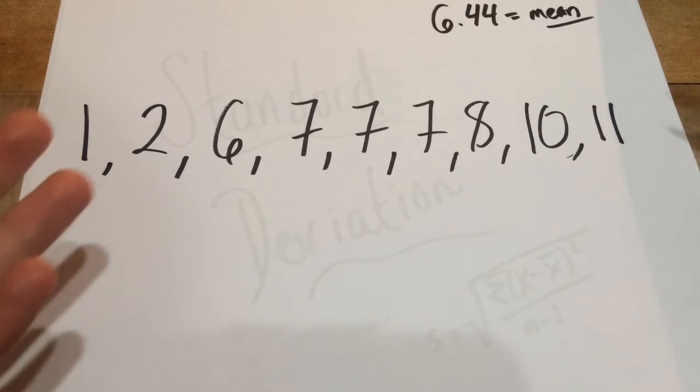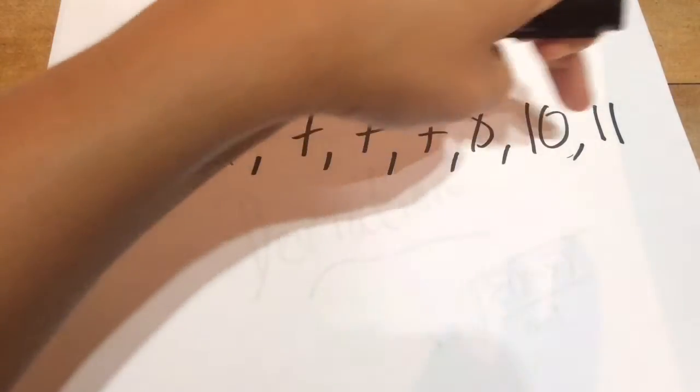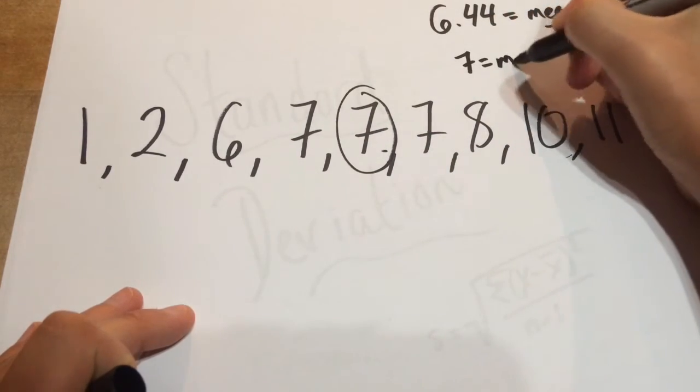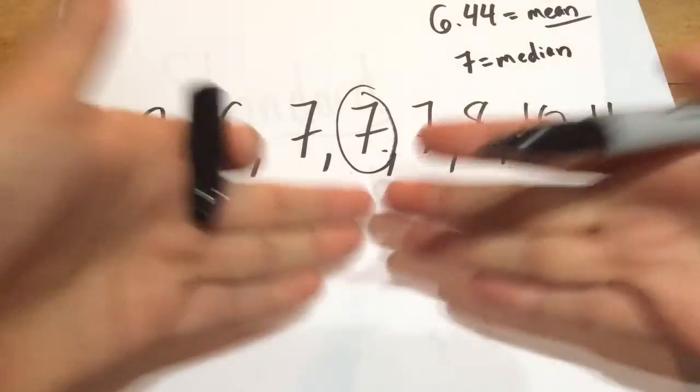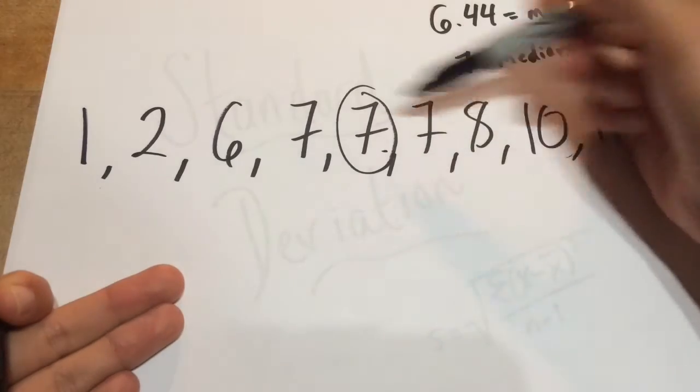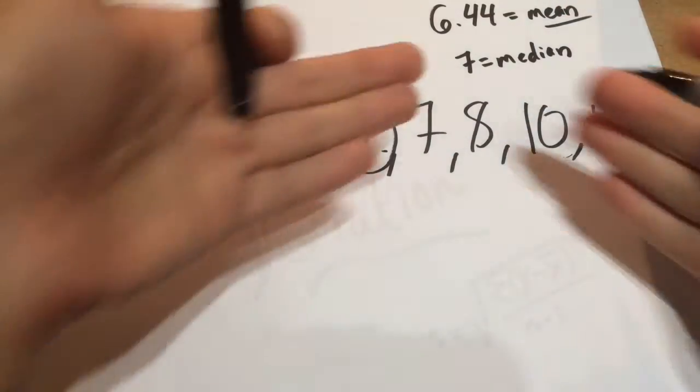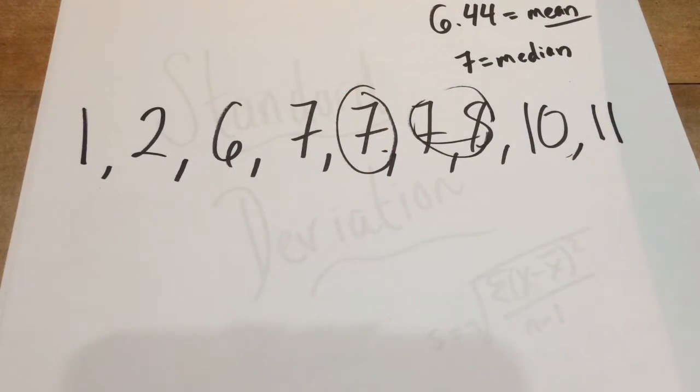Our median, we would just look at the middle value, which in this case, we count up our numbers one through nine. We have an odd set, so we actually do have a middle number, so seven is our median. Now if this were an even set of numbers, all we do is we would take the average of the two middle numbers put together. In this case, probably wouldn't be a problem because the sevens are common in the middle here, but say we had a seven and an eight in the middle, we would average these two together, and we would get 7.5 as the median there, but that's only when you have an even number of numbers in your data set.